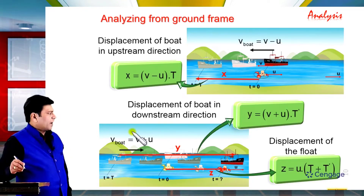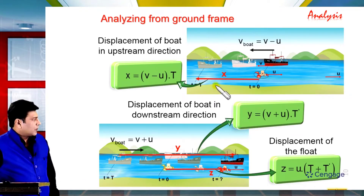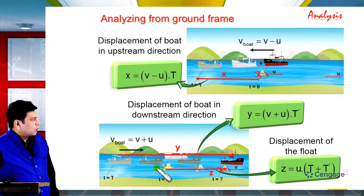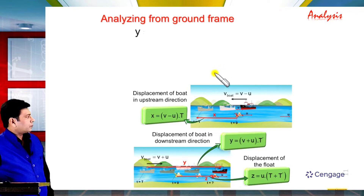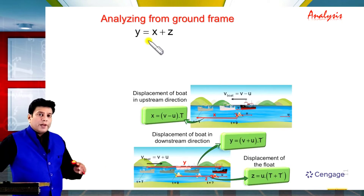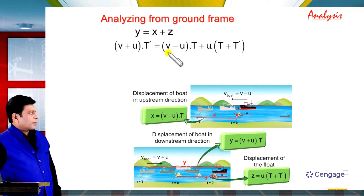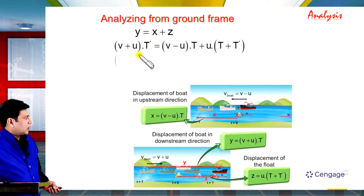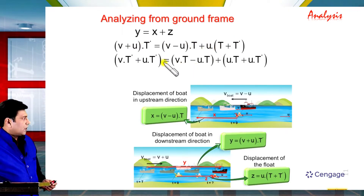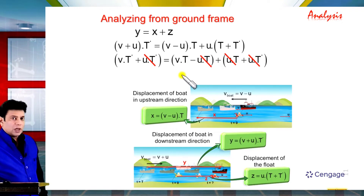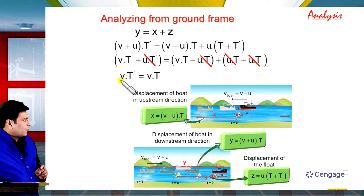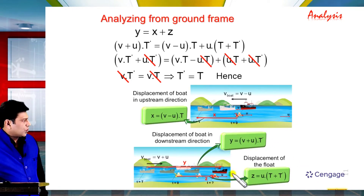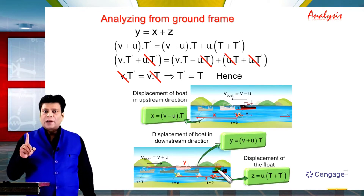Using simple geometry of displacements, we can see that y equals x plus z. Substituting the expressions for x, y, and z and simplifying, several terms cancel. After cancellation, we are left with v times t' equals v times T, and since v cancels, we get t' equals T.